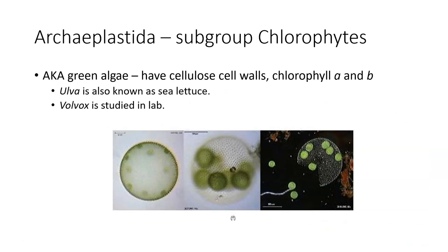Chlorophytes are our green algae. Volvox is one that we have you look at in labs — sometimes we even have a live sample so you can see them swimming around on the microscope slide. Ulva is known as sea lettuce; it looks kind of like butter lettuce that's in the ocean, which is why it's called sea lettuce.